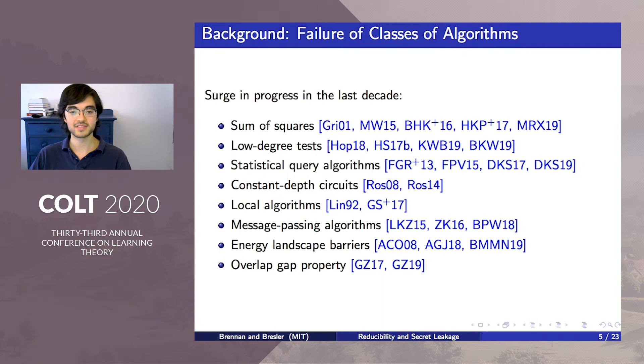Analyzing the optimal performance of classes of algorithms has seen a lot of progress in the last decade. There are now established techniques showing lower bounds in average case problems for the sum of squares hierarchy, low-degree polynomial tests, statistical query algorithms, message-passing algorithms, and many other classes of algorithms.